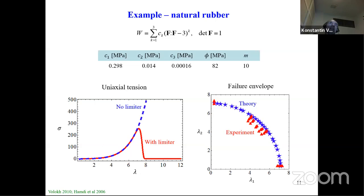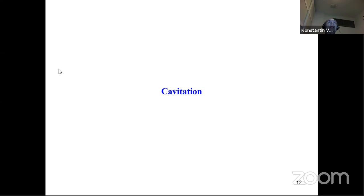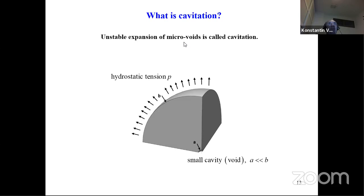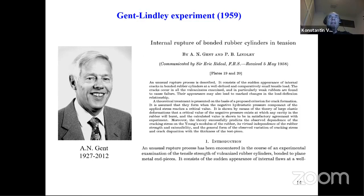Now let's consider the problem of cavitation. Cavitation is the unstable expansion of micro-voids. We have a thick-wall sphere with a small cavity of radius a and an external radius; the hydrostatic tension is applied at infinity, very remote. This problem was considered for the first time experimentally by Gent and Lindley in their famous paper 'Internal Rupture of Bonded Rubber Cylinders in Tension.' They used a rubber cylinder in the form of a poker chip — very thin — glued to discs and put under tension, in order to achieve a state of hydrostatic tension.